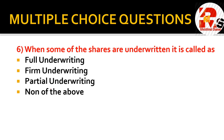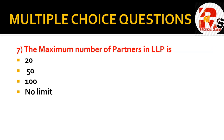When some of the shares are underwritten, it is called — full underwriting, firm underwriting, partial underwriting, or none of the above? This is an easy question but many students make a silly mistake. Since it says 'some of the shares,' full underwriting cannot be the answer. Some students will mark firm underwriting, which is completely wrong. When only some shares are underwritten, that is called partial underwriting.